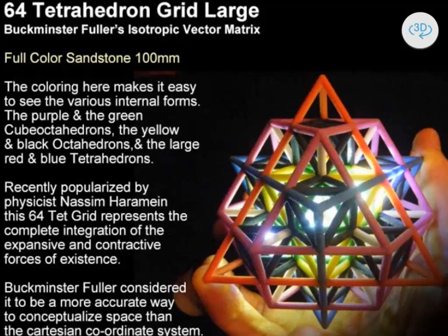The 64 tetrahedron grid is a particular isolation of a section of the isotropic vector matrix. There are very interesting forms inside it that are made visible by this colored version, so let me load the 3D interface here.